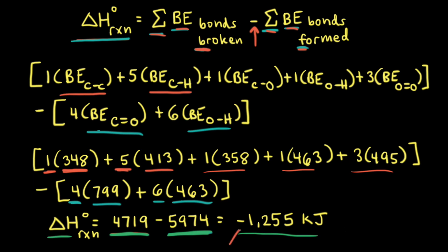Notice that we got a negative value for the change in enthalpy, and that means the combustion of ethanol is an exothermic reaction — 1,255 kilojoules of energy are given off for the combustion of one mole of ethanol. Also notice that the sum of the bond enthalpies of the bonds formed (5,974) is greater than the sum of the bond enthalpies of the bonds broken (4,719), and since we're subtracting a larger number from a smaller number, we get that negative sign for the change in enthalpy.